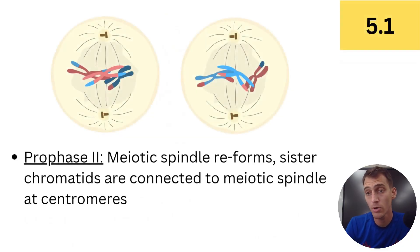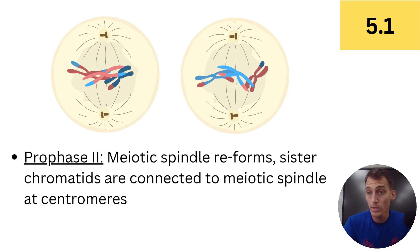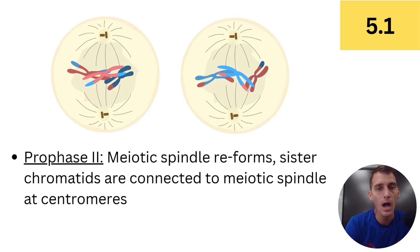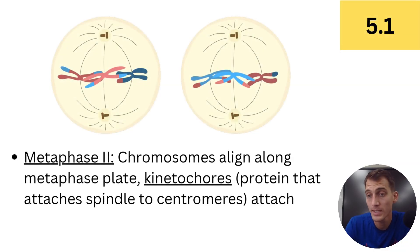At the end of meiosis I — telophase I — we end up with two haploid daughter cells with duplicated chromosomes. They're haploid because they have only one set of chromosomes, but there are two copies of that set. These chromosomes don't have a homologous partner; they'll get one through fertilization when the sperm fuses with an egg. Now we need to separate the sister chromatids during meiosis II, so prophase II begins: the meiotic spindle reforms and sister chromatids connect to it at the centromeres.